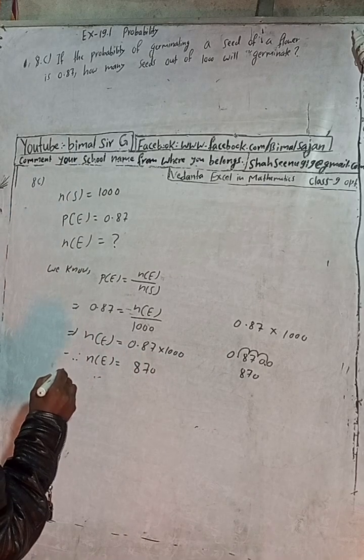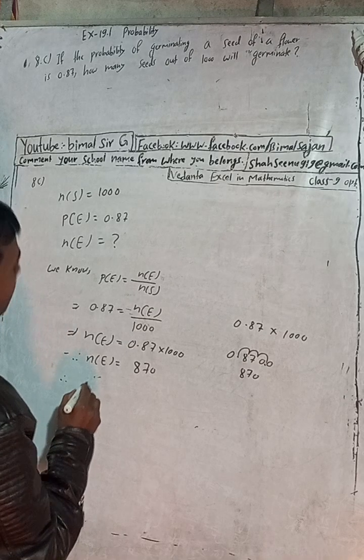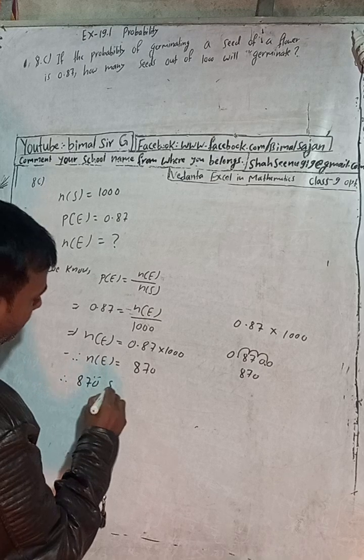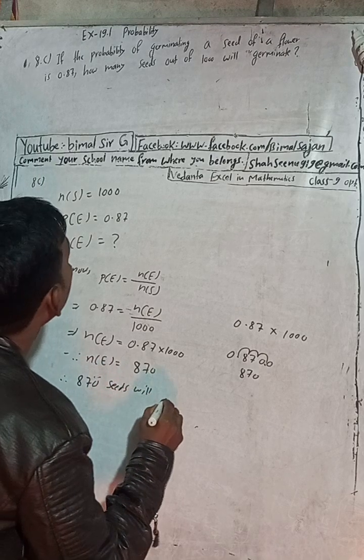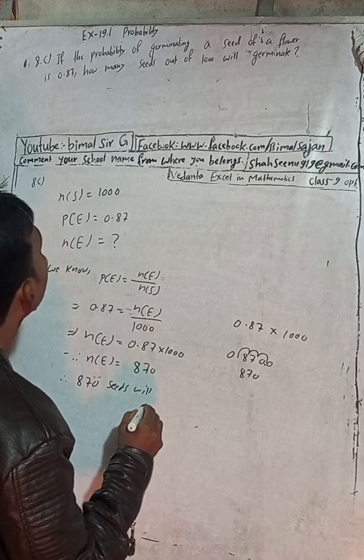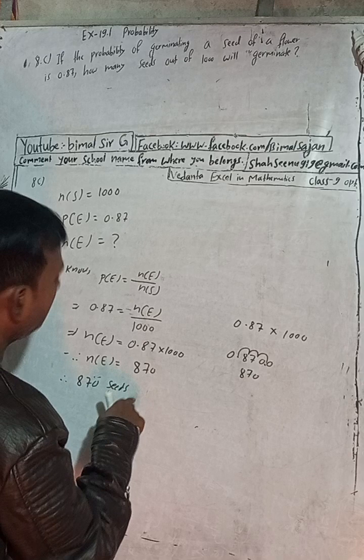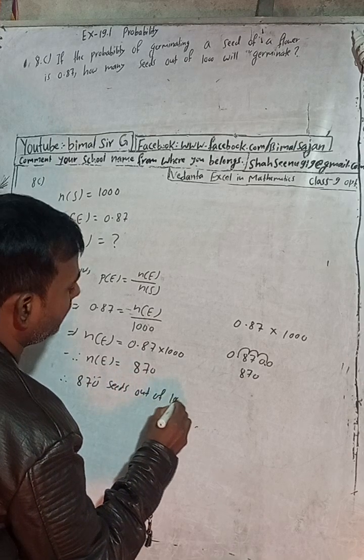This is here, point is right now. So our answer is what? 870. 870 is our answer. How many seeds out of 1,000 will germinate?